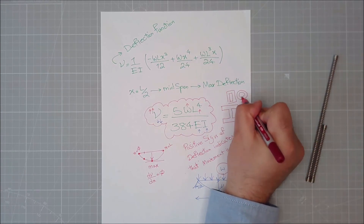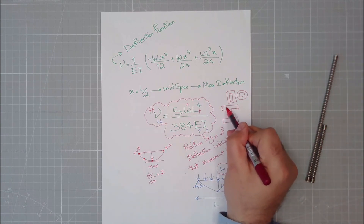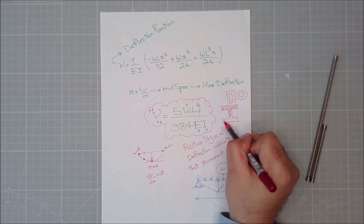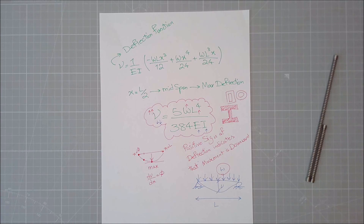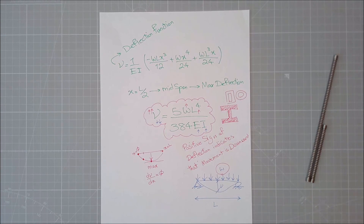That is all for Lecture 7, which mainly discussed deflection of beams and how to calculate it through double integration. We also discussed elastic beam theory and the elastic section modulus. Practice the worksheet, problem number five, which has many problems related to deflection and boundary conditions. Keep safe, good luck, see you later.